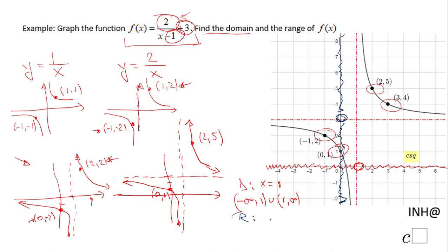The range is any number but 3, and here I should have crossed that one. Or if you need the interval notation: negative infinity, 3, union, 3, infinity.